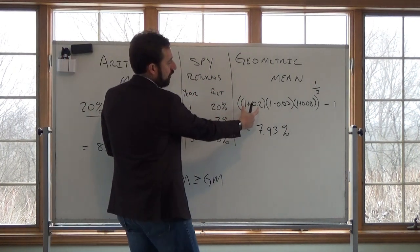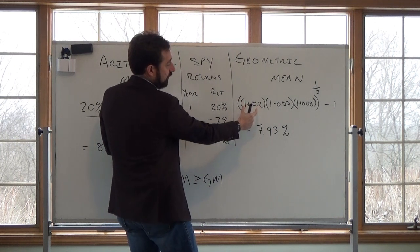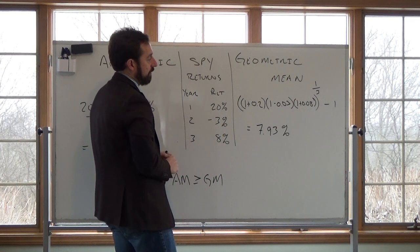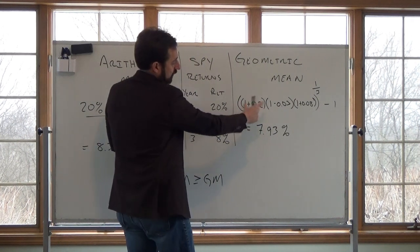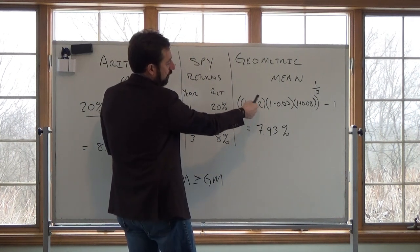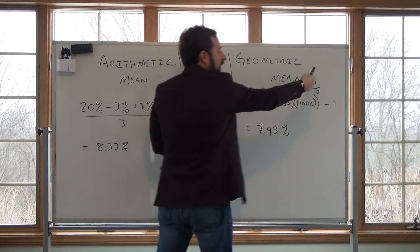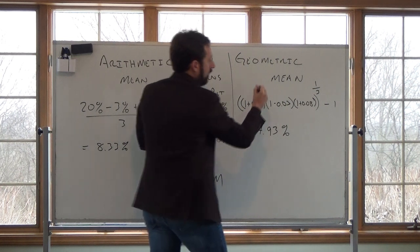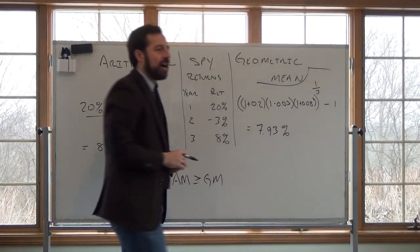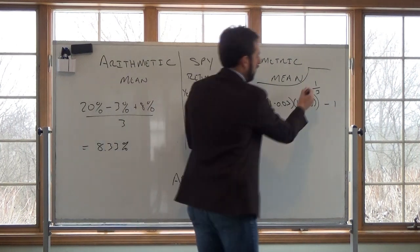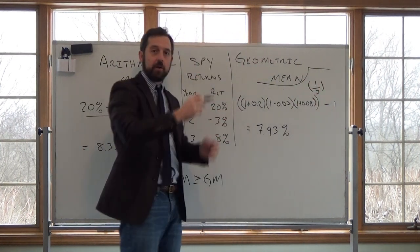So the idea here is we earn 20% the first year, lose 3%, and then we earn 8%. So taking into account compounding, we have 1.02 times 0.97 times 1.08, and then we take the cube root of it. Right, so in your calculator, if I were to enter this into a cell, I would take these three numbers and raise it to the power of one-third.